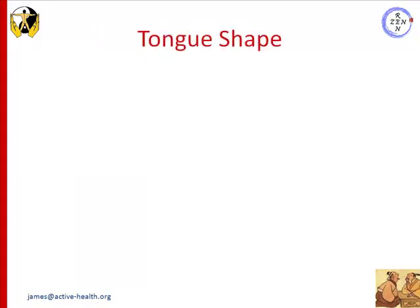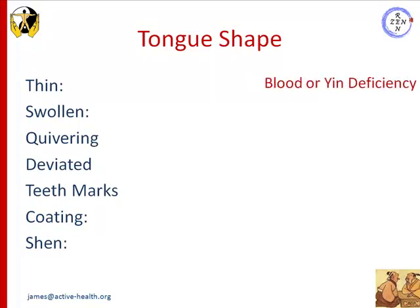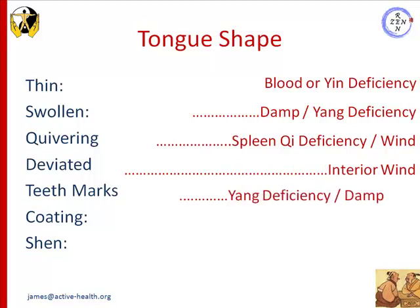Let's look at tongue shapes. A thin tongue is due to blood or yin deficiency. A swollen tongue is due to dampness or yang deficiency. A quivering tongue indicates either spleen qi deficiency or wind — two completely separate patterns of disharmony. A deviated tongue is indicative of interior wind. When we find teeth marks on the tongue, this is indicative of yang deficiency and/or dampness.